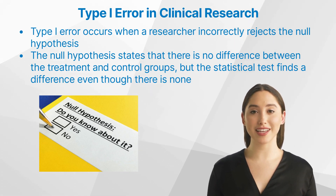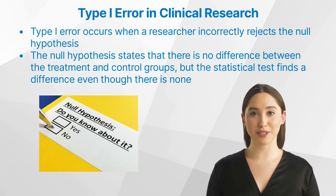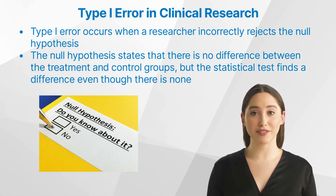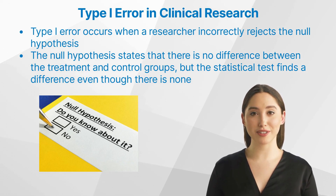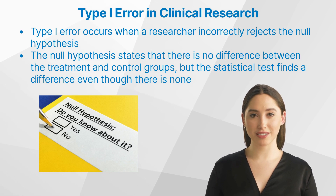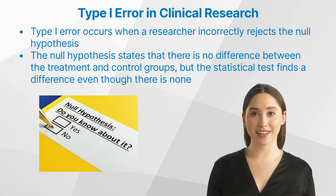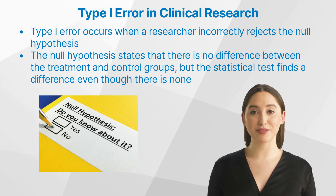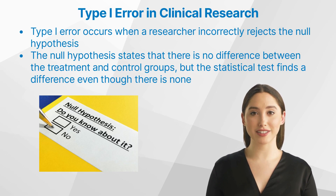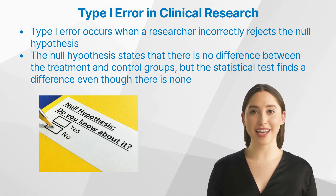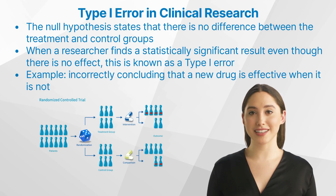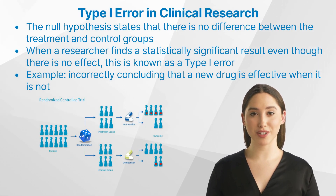The null hypothesis states that there is no difference between the treatment and control groups, but the statistical test finds a difference even though there is none. In clinical research, this can lead to incorrect conclusions and be detrimental to making decisions about treatments, therapies, or interventions. Understanding type 1 error is essential for conducting valid and reliable studies.